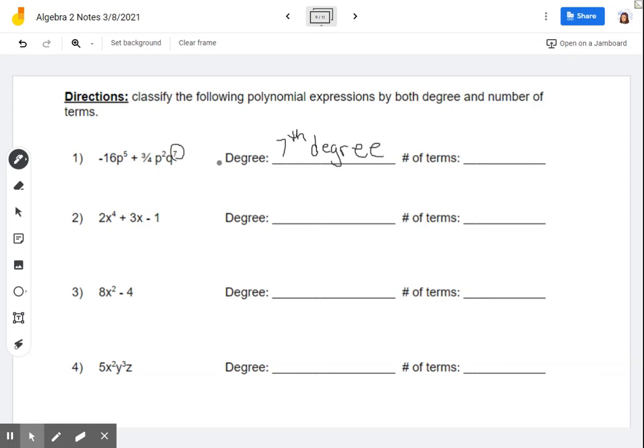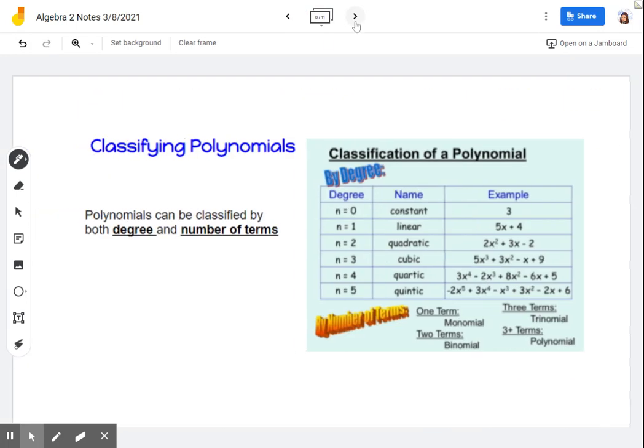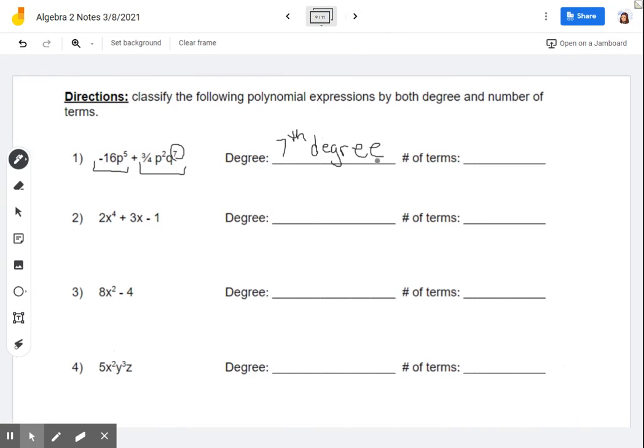If we're looking at the number of terms, terms are separated by plus and minus signs. So here is one term. Here is two terms. If we go back to the prior slide to remind ourselves, two terms is a binomial. So this here is an example of a seventh degree binomial.